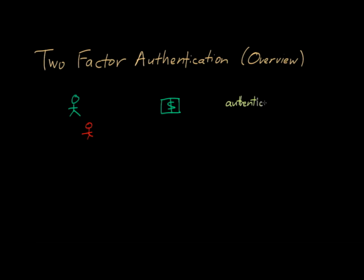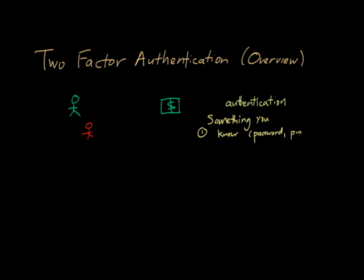So how do we go about achieving authentication? There are a few different mechanisms you can leverage. For starters, you can authenticate yourself via what we call something you know. Examples of something you know include a password, an ATM PIN number, a combination like a physical combination lock — some secret that only you are supposed to know.